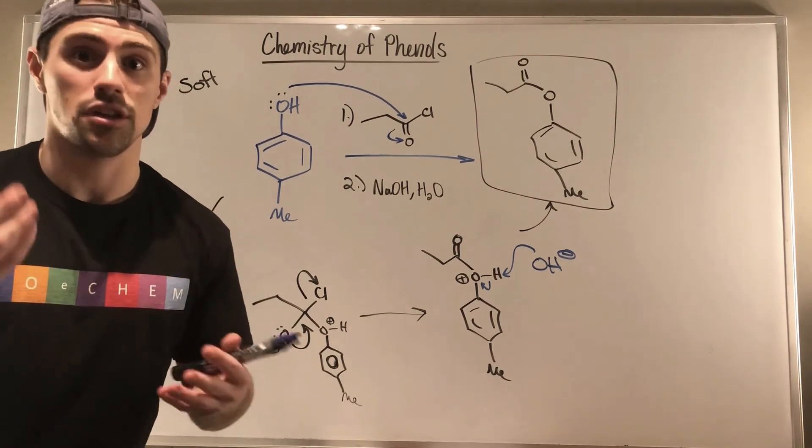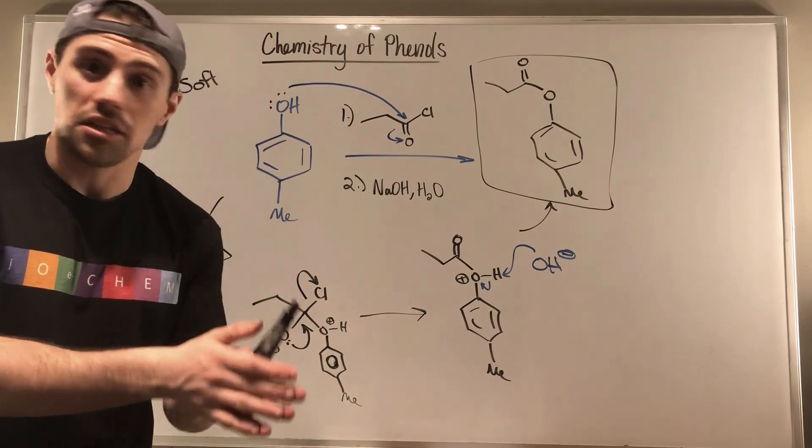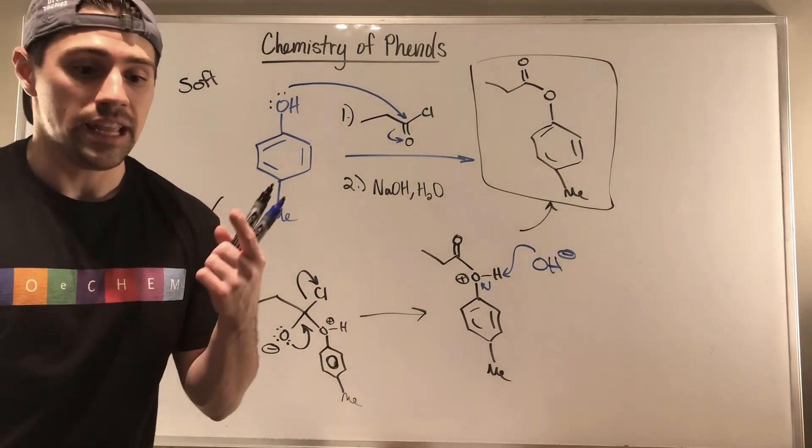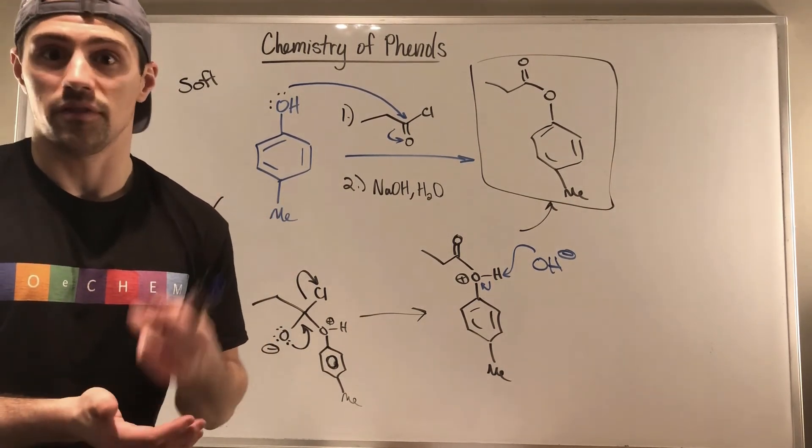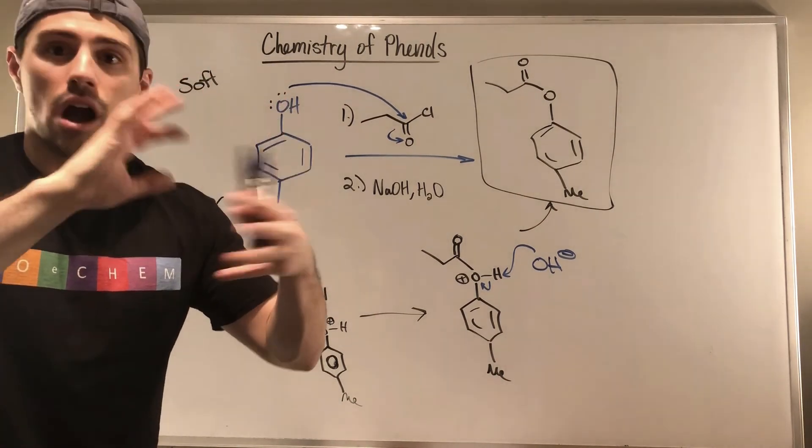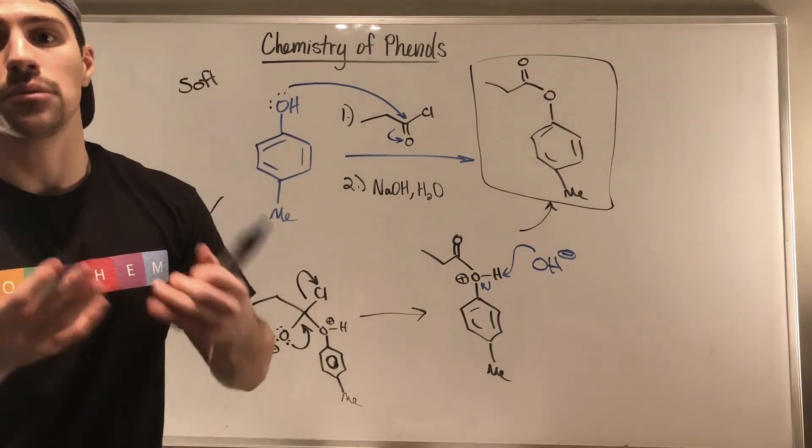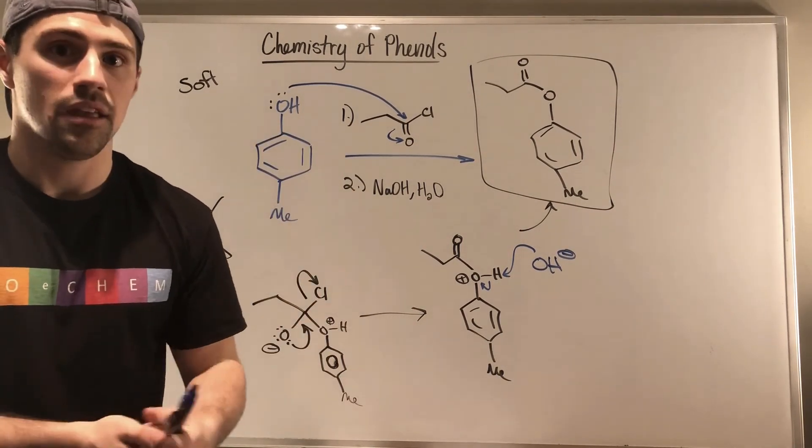But regardless, we can do all the same things that we did with regular alcohols with phenols. We can attack carboxylic acid derivatives. We can make ethers. We can transform our alkoxybenzenes into good leaving groups, have something attack it to regenerate the original alcohol it came from.